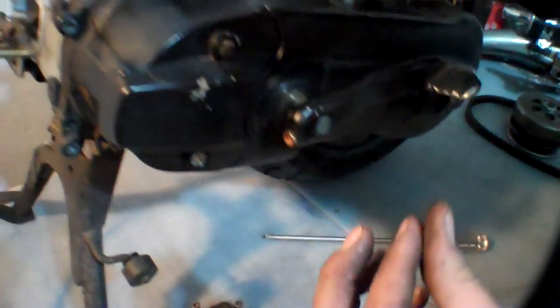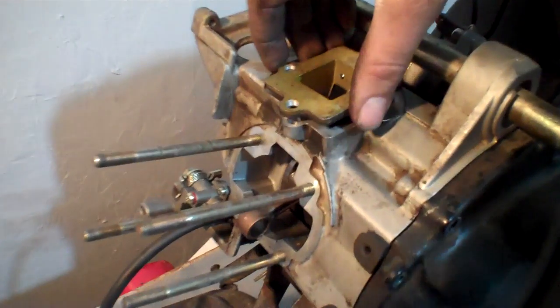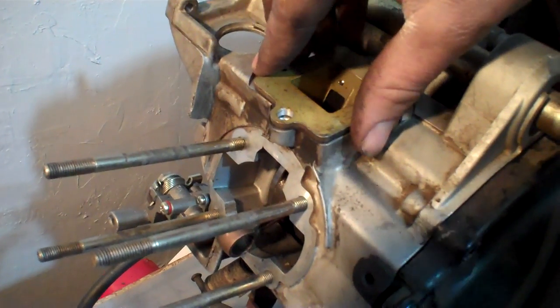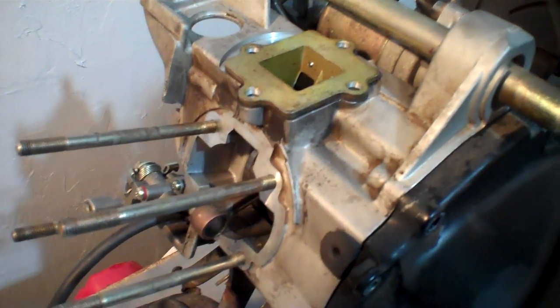Now we're going to go ahead and drop this reed cage right back into the basket, just like so. Now you're ready to bolt your intake manifold back on and you're done.